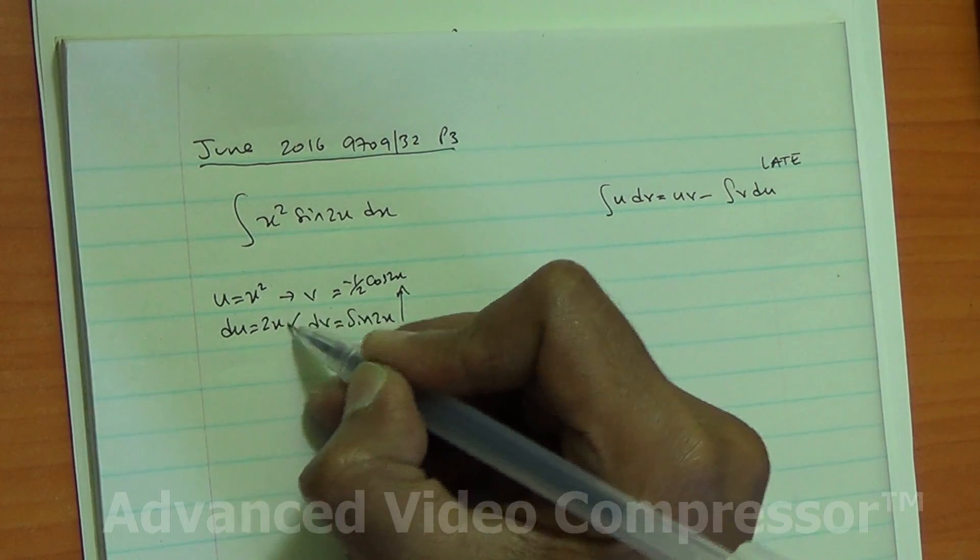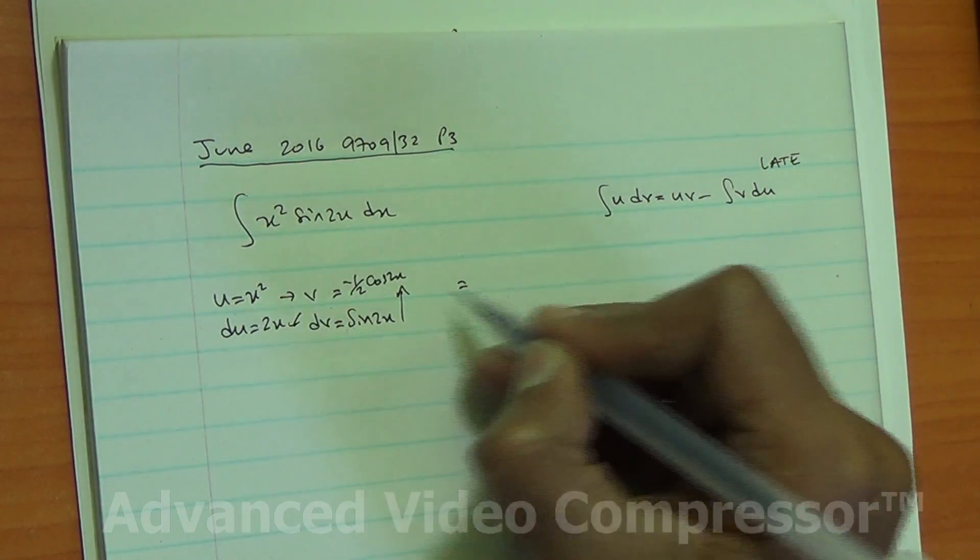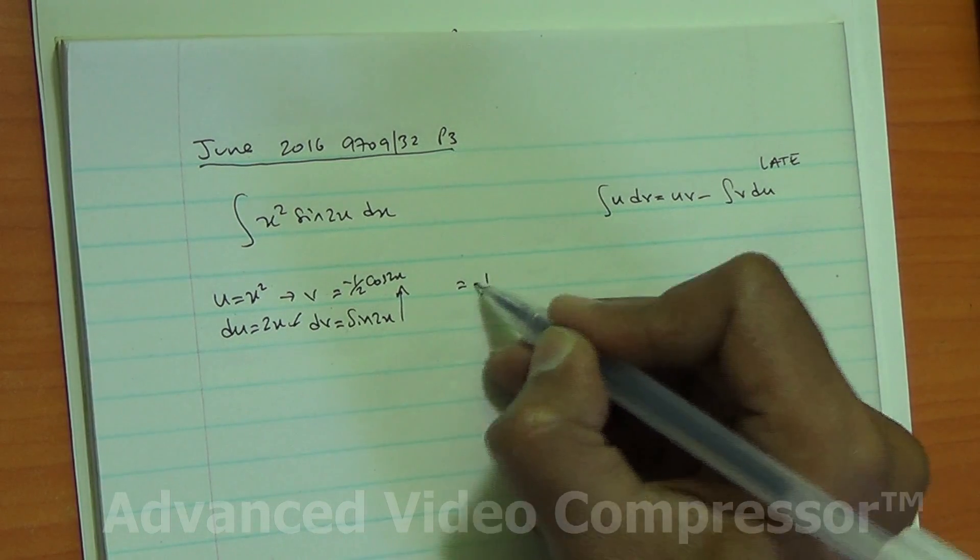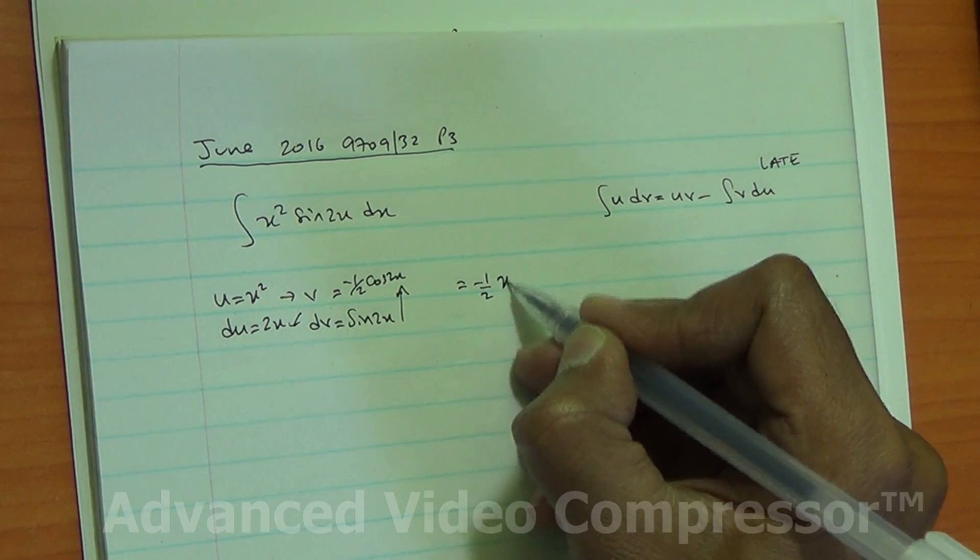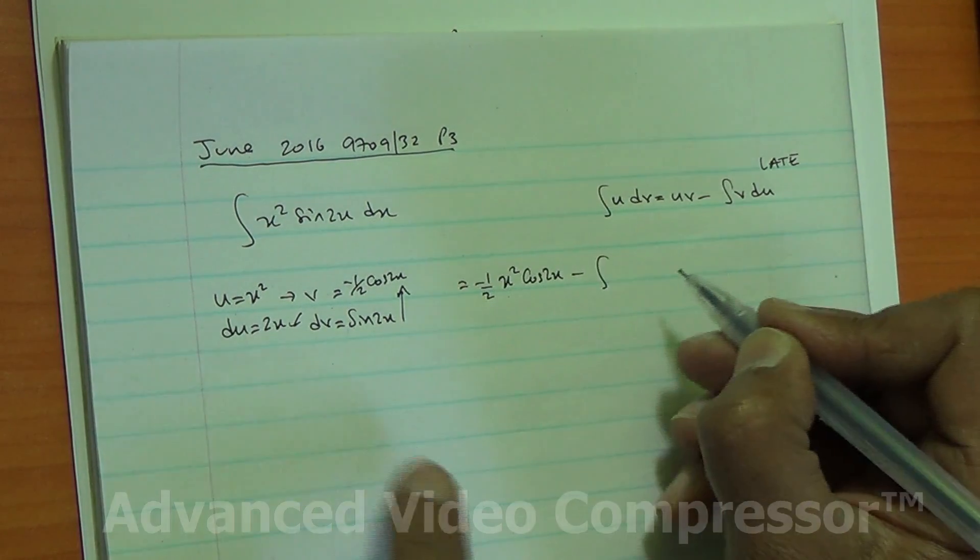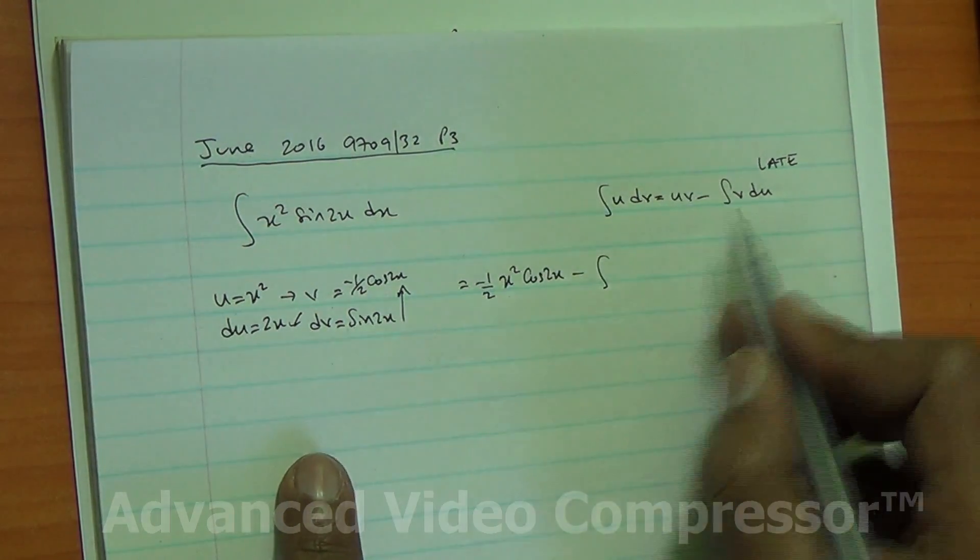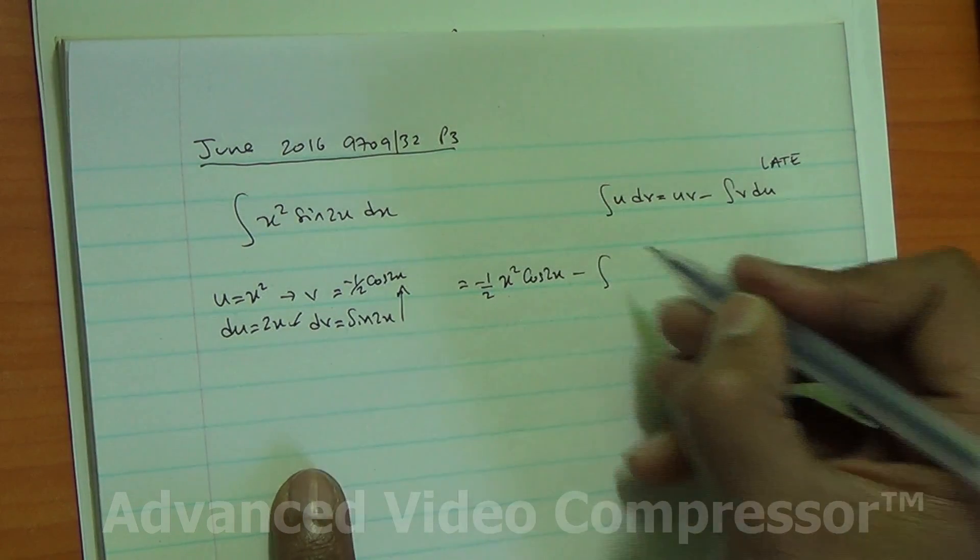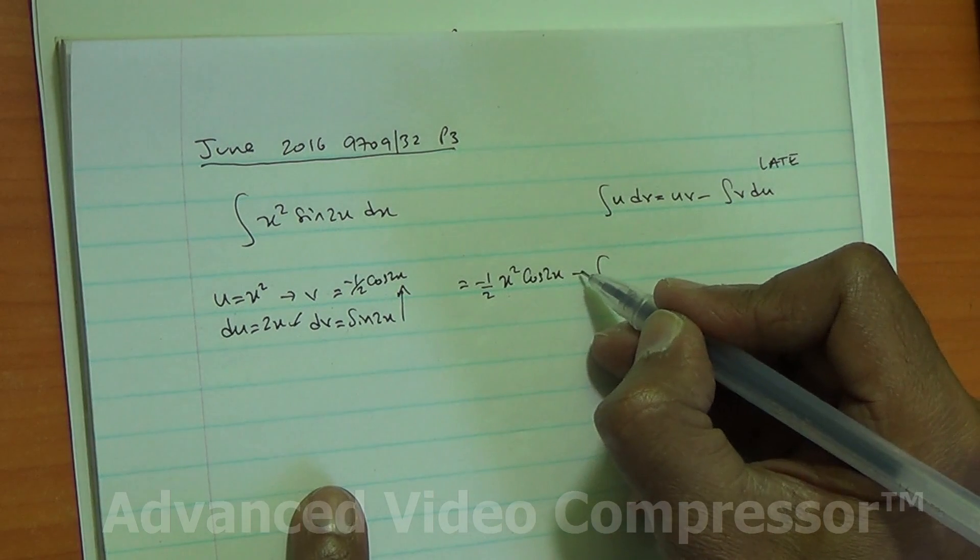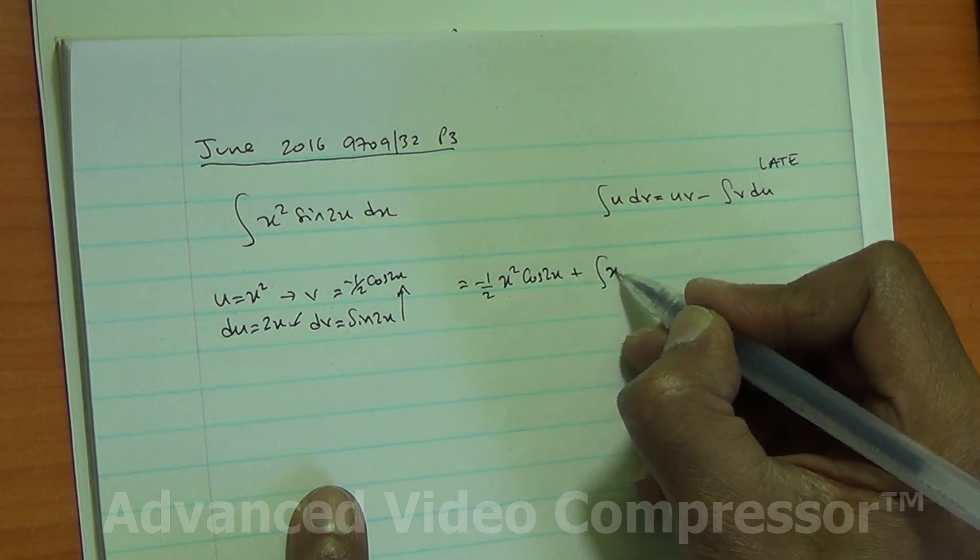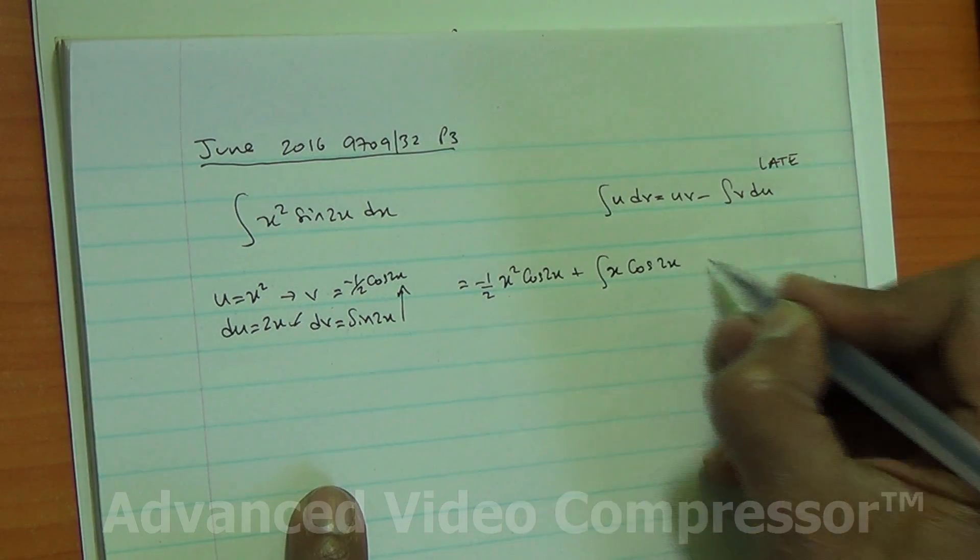So uv, therefore I've got uv which is minus half times x squared cos of 2x, minus the integral of v du. v du is minus half times 2x which is minus x, and minus times minus becomes plus of x cos of 2x dx.